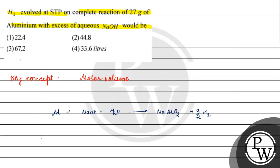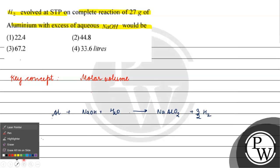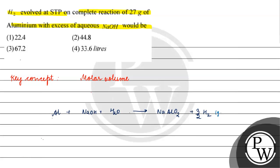Stoichiometrically, we can see that one mole of aluminium gives three-by-two moles of hydrogen gas. Now, we have 27 grams of aluminium.